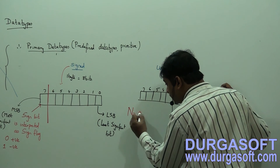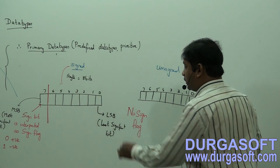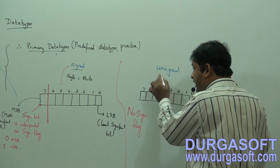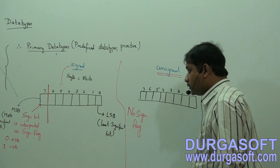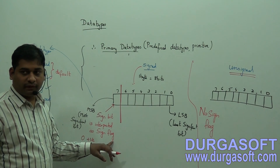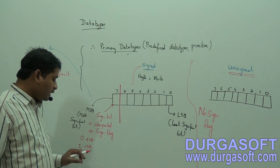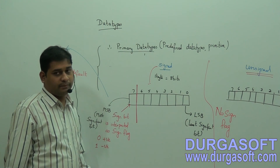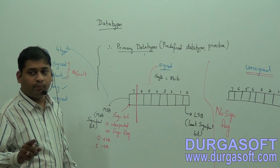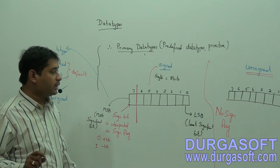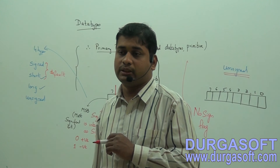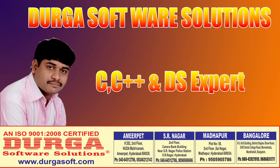If defined as unsigned, there is no sign flag. Everything is calculated normally because all values are positive — this is unsigned type. So when you define as signed, the last higher-order bit is interpreted as a sign flag: 0 means positive, 1 means negative. Short and long refer to less and more bytes respectively.